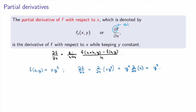I can define in the same way the partial derivative with respect to the other variable y. So ∂f/∂y is the derivative of f with respect to y while keeping x constant. For my example, ∂f/∂y of xy³ — treating x as a constant I can pull it out, leaving the derivative with respect to y of y³, which is 3y². So I end up with 3xy². These are the two first-order partial derivatives of f(x, y) = xy³.